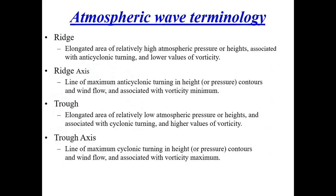Let's kick off part one and talk about atmospheric wave terminology. The first thing we need to discuss is a ridge — an elongated area of relatively high atmospheric pressure heights. It's associated with anticyclonic flow, which simply means clockwise motion, just like the hands of a clock. There are lower values of vorticity associated with the ridge, and the ridge axis is a line of maximum anticyclonic turning and height or pressure contours.